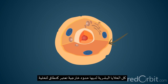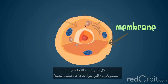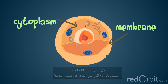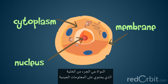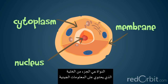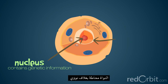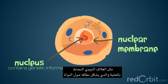All human cells have an outer border that's the boundary of the cell, called the cell membrane. A liquid material called cytoplasm is inside the cell membrane, and there's a large structure suspended in the cytoplasm called the nucleus. The nucleus is the part of a cell that contains the genetic information. The nucleus is surrounded by a nuclear membrane that, like the cell membrane, makes a boundary around the nucleus.